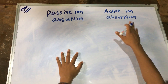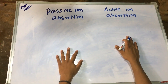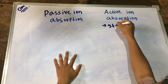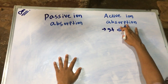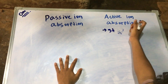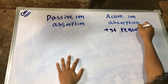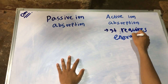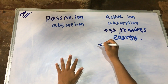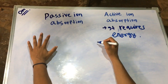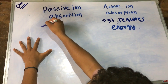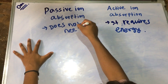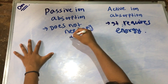In case of active ion absorption, it requires energy. And in case of passive ion absorption, it does not need any kind of energy.